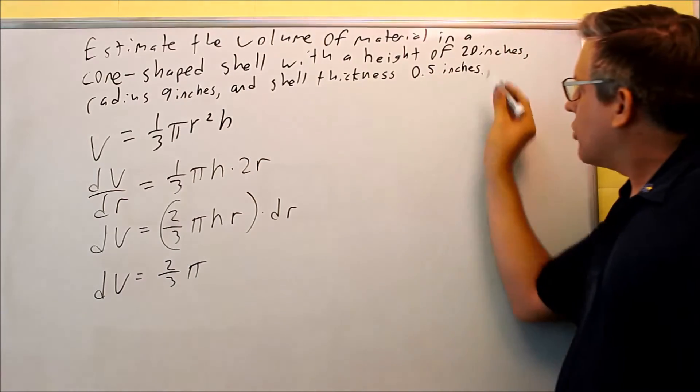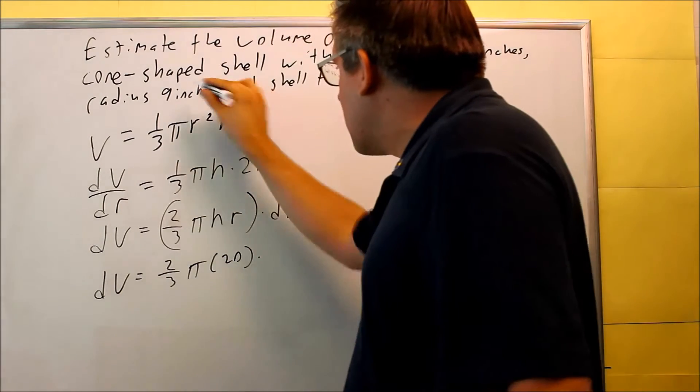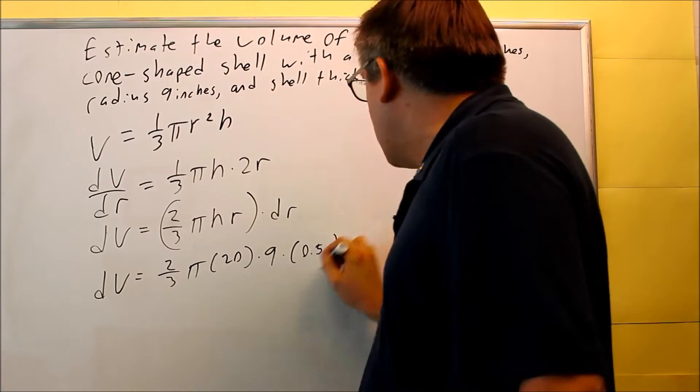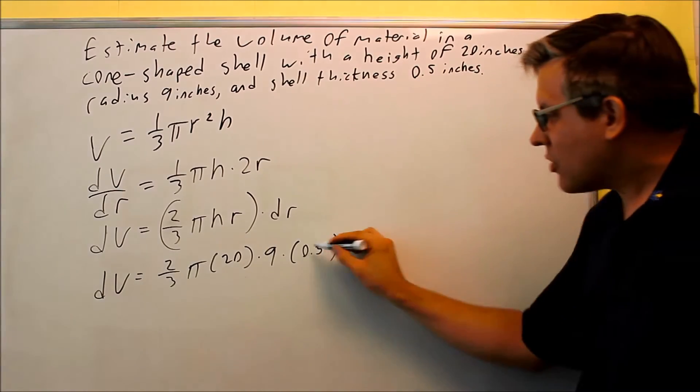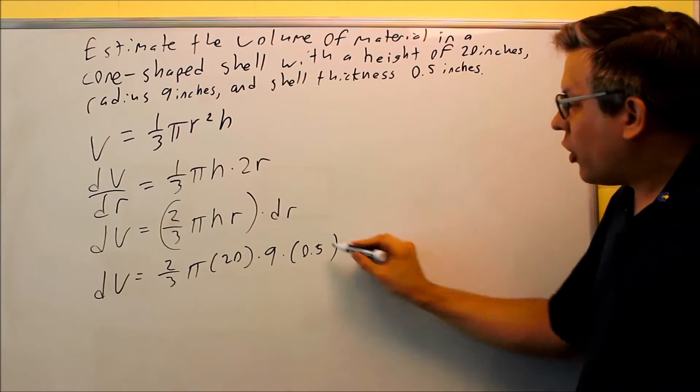Now I'm going to pull in all the information that's given. I'm given a height of 20 inches. My radius is 9 inches. We already mentioned before that your dr is going to be the difference in the radius between the inner and the outer radius of this. So that's 0.5 inches there.